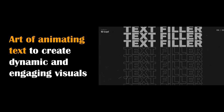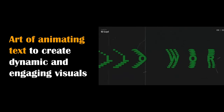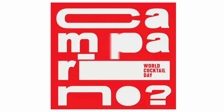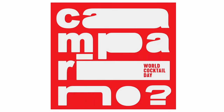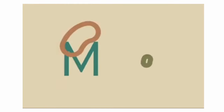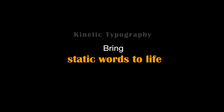Kinetic typography is the art of animating text to create dynamic and engaging visuals. It is widely used in video content, advertisements, and presentations to capture viewers' attention and convey messages with flair. Examples include text that dances to the beat of music, words that morph and change to reflect the narrative, and sentences that playfully interact with the environment, breathing life into the written word. By adding movement, designers bring static words to life, enhancing their impact and storytelling.